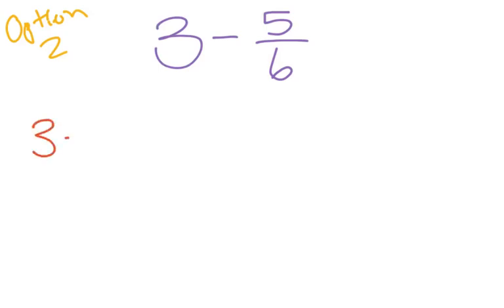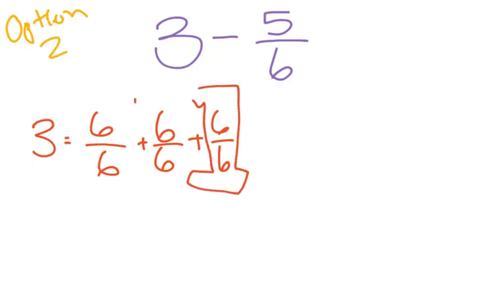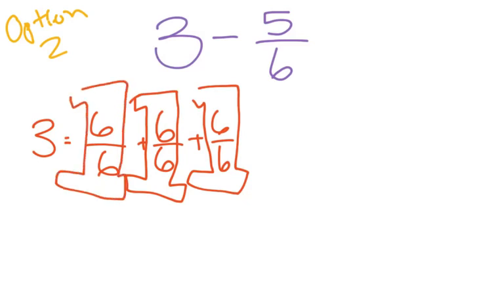3 wholes is actually 6 sixths plus 6 sixths plus 6 sixths. Because that's 1, 2, 3 wholes right there. So you could add them up and say 6 plus 6 plus 6 or 6 times 3 is 18 sixths. Double check because that fraction bar actually represents division. Does 18 divided by 6 equal 3? Yes it does.